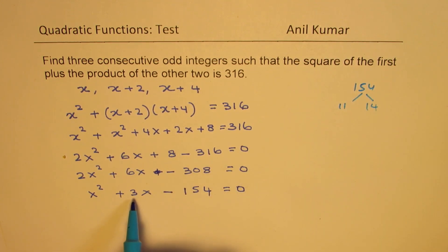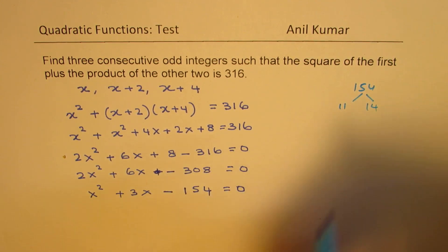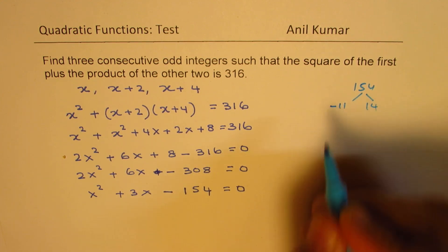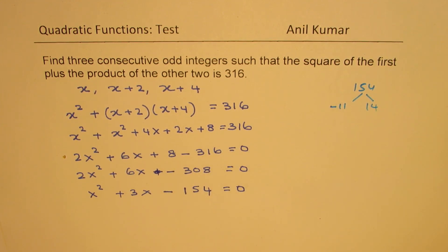And their sum will be—one of them has to be negative. So if I take minus 11, in that case we can factor this. So we can write this as x plus 14 times x minus 11 equals to 0.